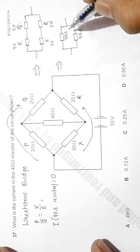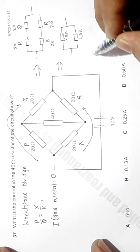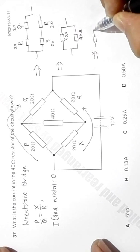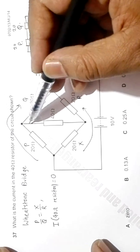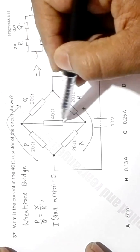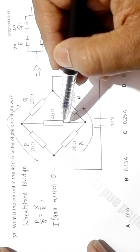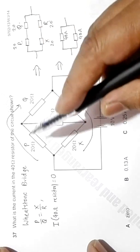This 40 and 40 in parallel will give us an equivalent resistor equal to 20 ohm. So we have answered two questions here. The first thing is the current through this 40 ohm resistor is zero since it fulfills the Wheatstone bridge condition, and next is the combined resistance of this arrangement of resistors.